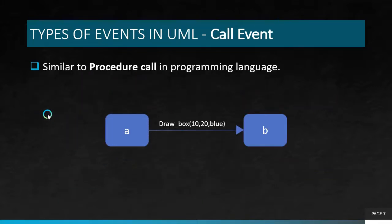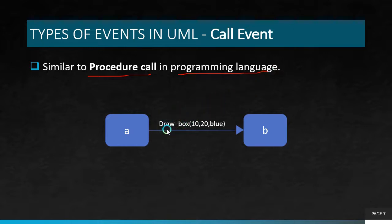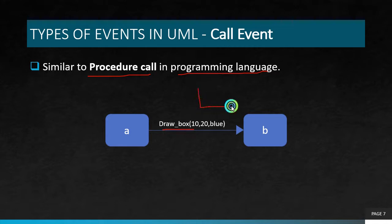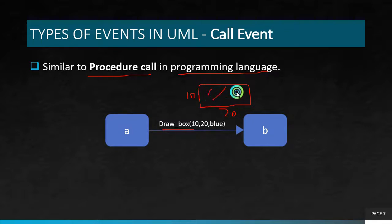Another one is the call event. A call event is similar to a procedure call, function call, or method call in programming languages. For example, draw box of height, width, color — this draws a box of height 10, width 20, and color blue. When we call that particular function, we go from state A to state B. This is the call event.